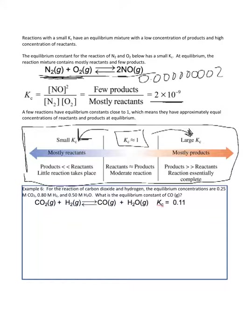Let's try example 6. For the reaction of carbon dioxide and hydrogen, the equilibrium concentrations are 0.25 molar carbon dioxide, 0.80 molar hydrogen gas, and 0.50 molar water. We want to know what is the equilibrium concentration of carbon monoxide. We're also given the Kc, which is less than 1, meaning at equilibrium we are going to have more reactants than products. Kc equals a fraction with the products in the numerator: CO and H2O, raised to their coefficients.